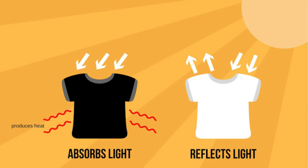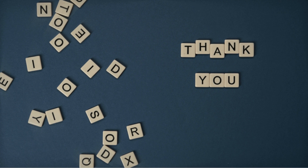In conclusion, the color of an object influences its ability to absorb or reflect light and heat. Black objects appear black because they absorb most wavelengths of light, converting the energy into heat. In contrast, white objects reflect most wavelengths, resulting in lower heat absorption. Understanding this concept helps explain why black colors tend to feel hotter than white colors when exposed to sunlight. We hope you found this explanation informative and enjoyed learning about the science behind color and heat absorption. Stay curious and we'll see you in the next video — thanks for watching.